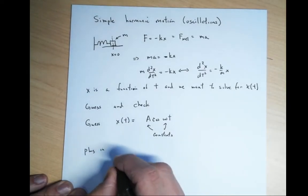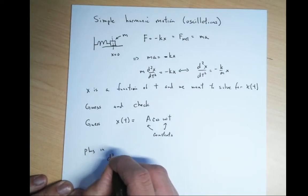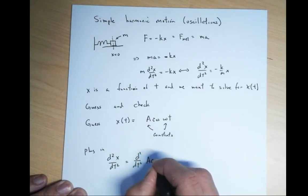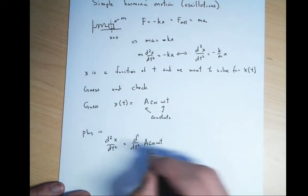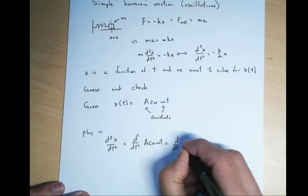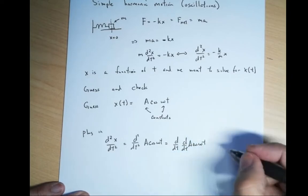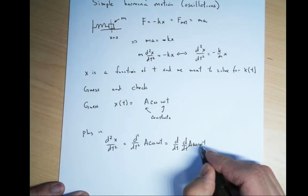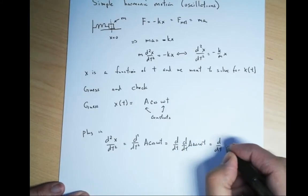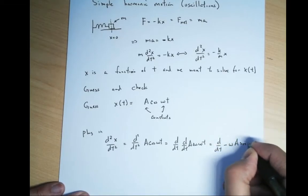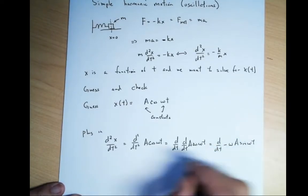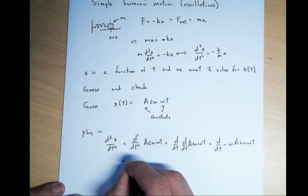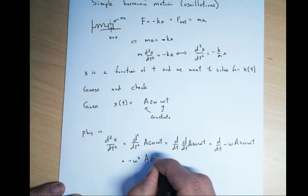When I write d squared x dt squared, I take two factors of d by dt. Taking it one at a time: d by dt of A cosine omega t gives minus omega A sine omega t by the chain rule. Hitting it again, the derivative of sine gives cosine, pulling another factor of omega, so we get minus omega squared A cosine omega t.